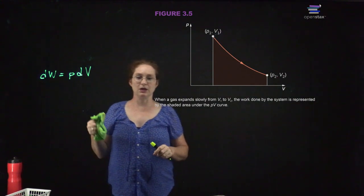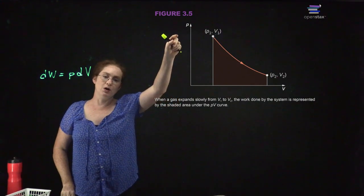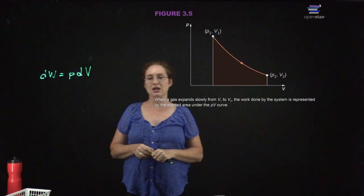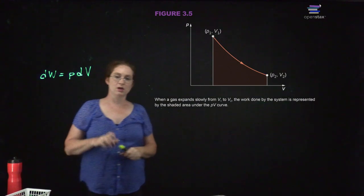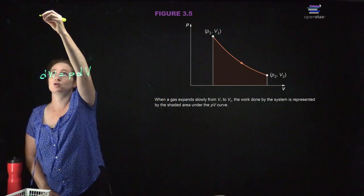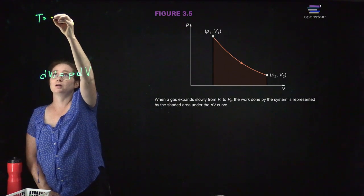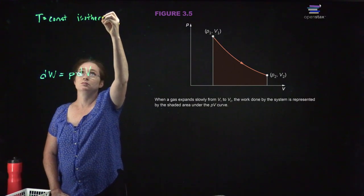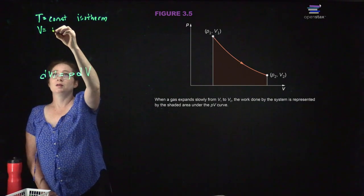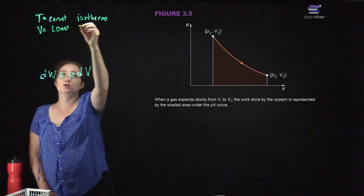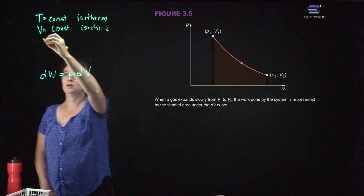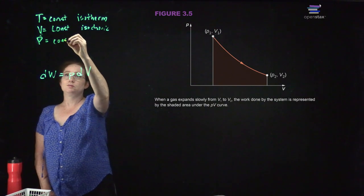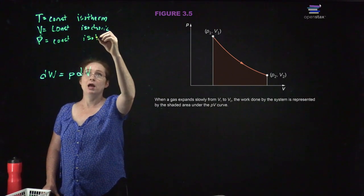Here you have a gas expanding slowly from volume one to volume two, with pressure and volume changing. We're going to deal with three different situations. First, constant temperature — this is called an isotherm. Second, constant volume — this is referred to as isochoric. Third, constant pressure — this is isobaric. In each of these three cases, we can calculate how much work is done.